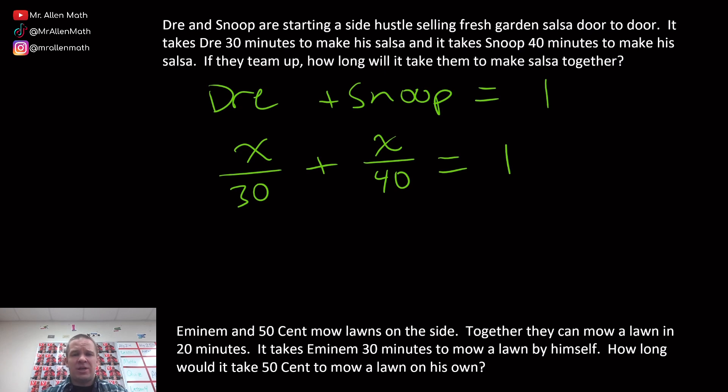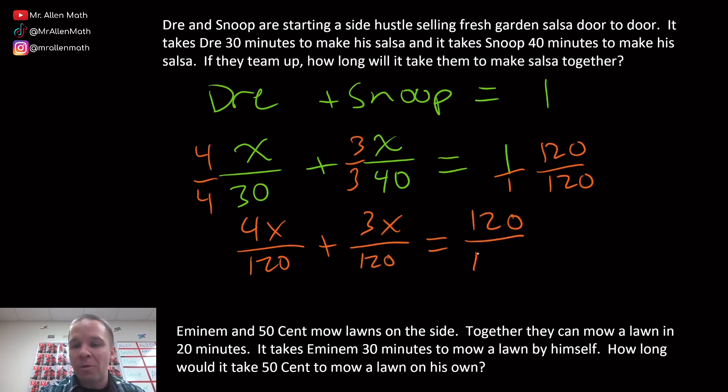Now how am I going to solve this equation? Well perhaps I can get some common denominators here. So 30 and 40 are my two denominators. Least common denominator is going to be 120. So I've got to multiply this guy by 4 over 4, this one by 3 over 3, and then for my 1, that's really like 1 over 1, so I'm going to multiply by 120 over 120.